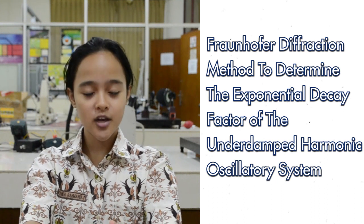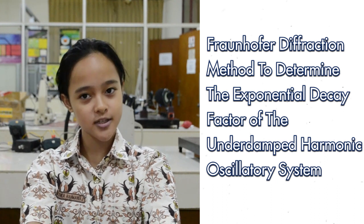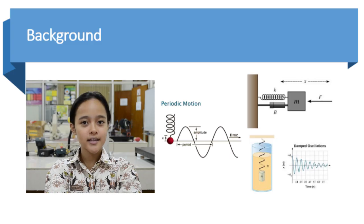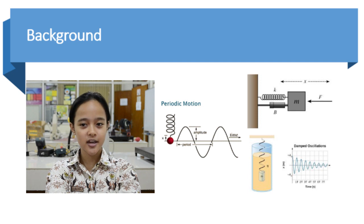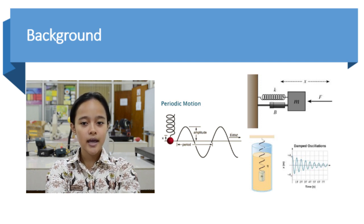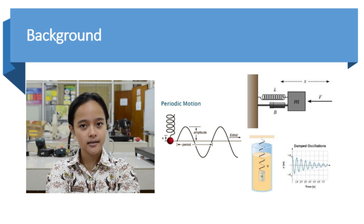The topic is the under-damped harmonic oscillatory system. Some quantities in a harmonic oscillation such as the spring constant, damping ratio, and exponential decay factor are crucial and helpful. They can be used to evaluate and analyze mechanical phenomena such as resonance, damping, and mechanical stability.